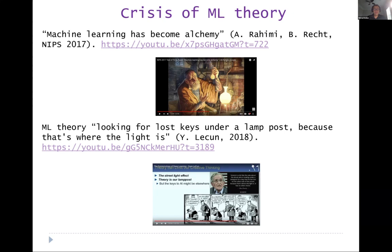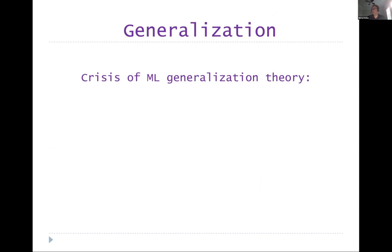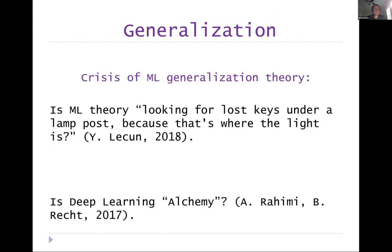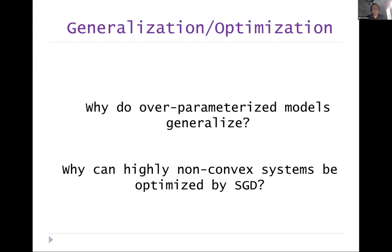There are really two issues here. First: why do very complex over-parameterized models generalize? And second: why can highly non-convex systems be optimized by methods such as stochastic gradient descent? This talk will primarily be about the first question, but I'll say something about the second one as well. In some sense the second one is easier, but the first is perhaps more fundamental for understanding what's going on. We now have some understanding, but it's not yet complete — though certainly much better than it used to be.